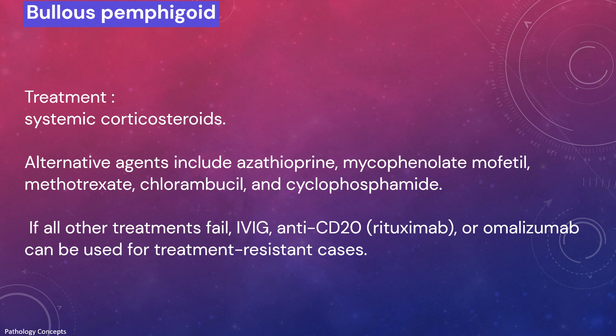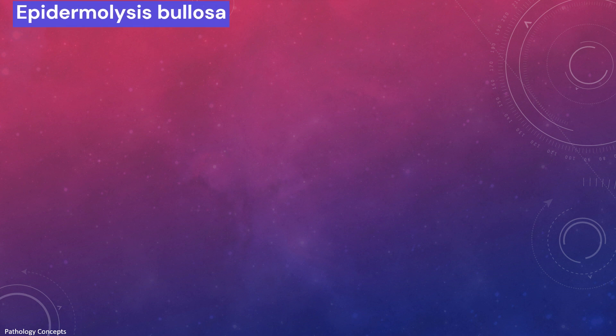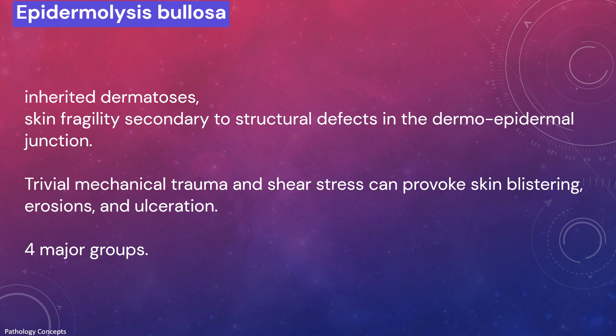Treatment of bullous pemphigoid is mainly systemic corticosteroids; alternative agents are similar to those of pemphigus treatment. Next is epidermolysis bullosa, which also shows sub-epidermal blister. It is an inherited dermatosis characteristically featuring skin fragility secondary to a structural defect in the dermo-epidermal junction; trivial mechanical trauma and shear stress can provoke skin blistering, erosions, and ulceration.